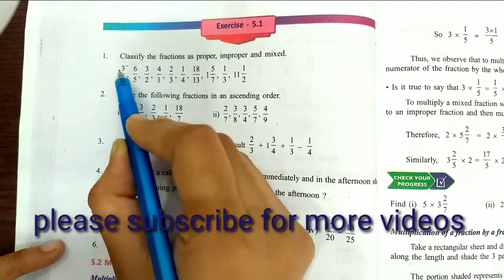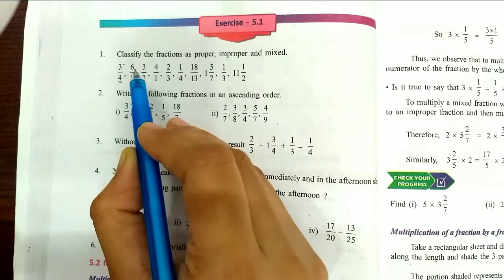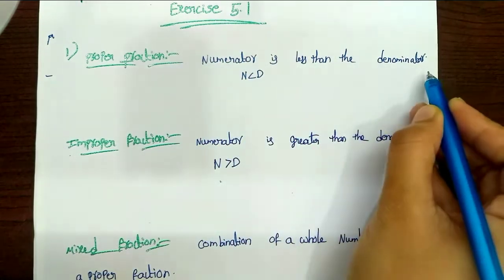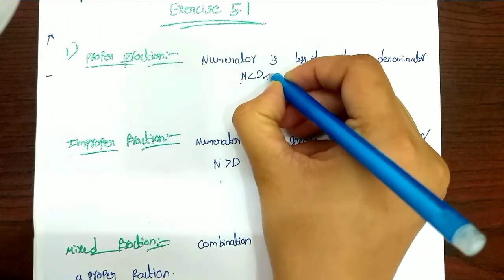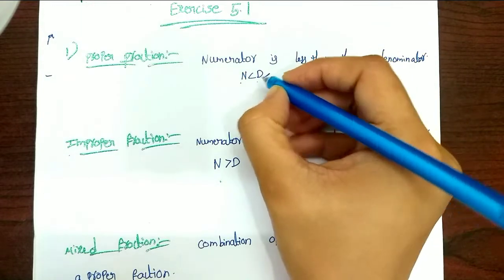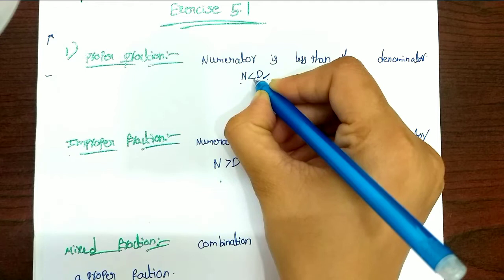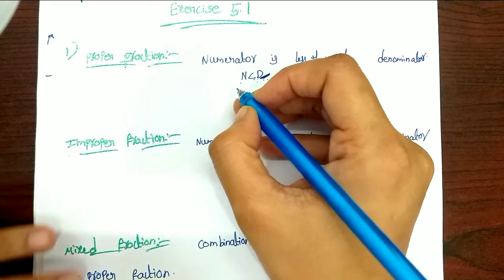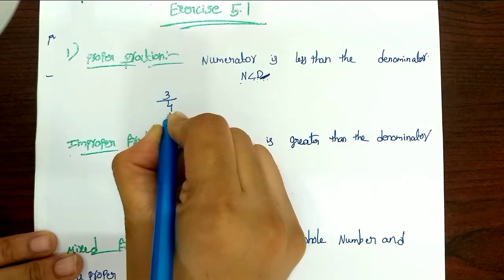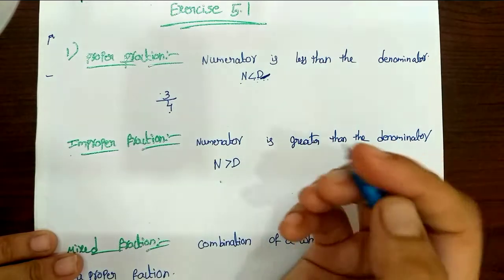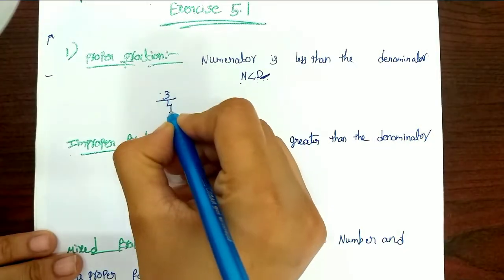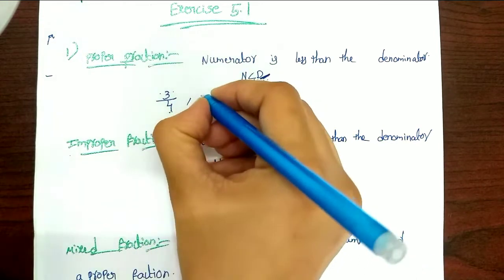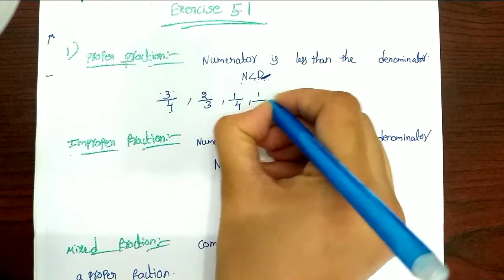The denominator is the largest number and the numerator is the smallest number. The numerator is less than the denominator — for example, 3 by 4: denominator is the largest, numerator is the smallest. So the proper fractions are 2 by 3, 1 by 4, and 1 by 3.